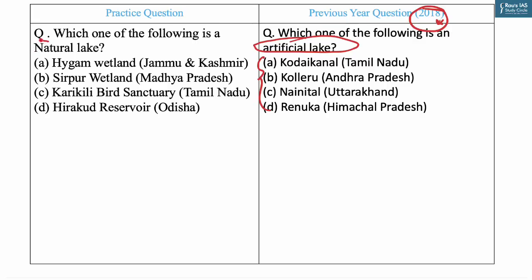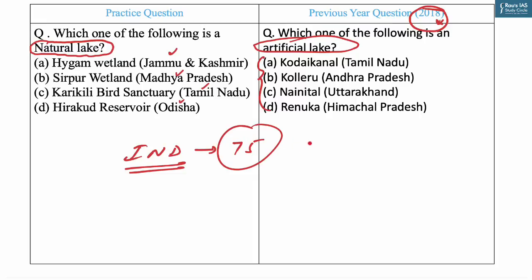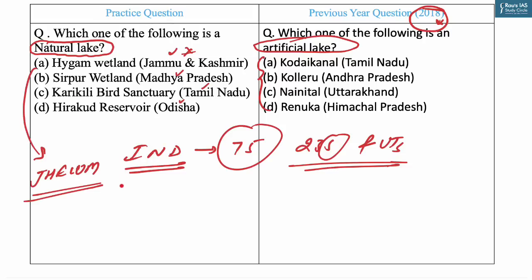Today's question asks: which one of the following is a natural lake? Options are: (1) Haigam Wetland in Jammu and Kashmir, (2) Sirpur Wetland in Madhya Pradesh, (3) Karikilli Bird Sanctuary, Tamil Nadu, and (4) Hirakud Reservoir, Odisha. India has the largest network of Ramsar sites, with 75 wetlands declared across 23 states and UTs. Haigam Wetland Conservation Reserve is a natural wetland in J&K within the River Jhelum basin and is an important bird area. Sirpur Wetland is man-made; Karikilli Bird Sanctuary is man-made; Hirakud Reservoir is also man-made — the largest earthen dam built across the Mahanadi River in Odisha.